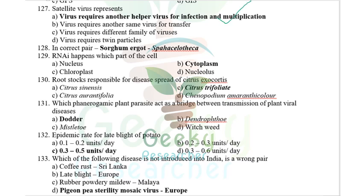Satellite viruses contain RNA and need another helper virus for infection and multiplication. Incorrect pair: sorghum ergot is caused by Claviceps, not Sphacelotheca — Sphacelotheca is not related to ergot. RNA interference occurs in the cytoplasm.